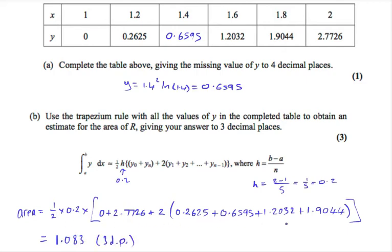So you can either put this whole thing in your calculator in one go, or if you prefer, you can break it down into parts. If you're going to do it in parts, then I would add up all of these first, times your answer by two, add the two values here, and then times your answer by 0.2 and then times it by a half.